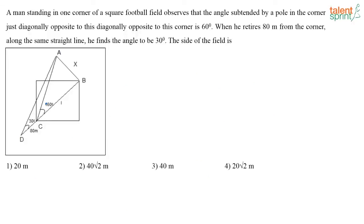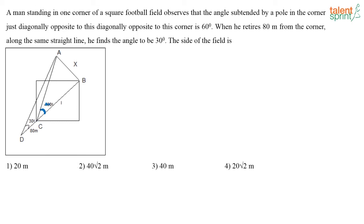A man standing in one corner of a square football field observed that the angle subtended by a pole in the diagonally opposite corner is 60 degrees. When he retires 80 meters from the corner along the same straight line, the angle is found to be 30 degrees. Find the side of the field. The man is standing in one corner and the pole is in the diagonally opposite corner. To solve, first find the diagonal, then find the side.